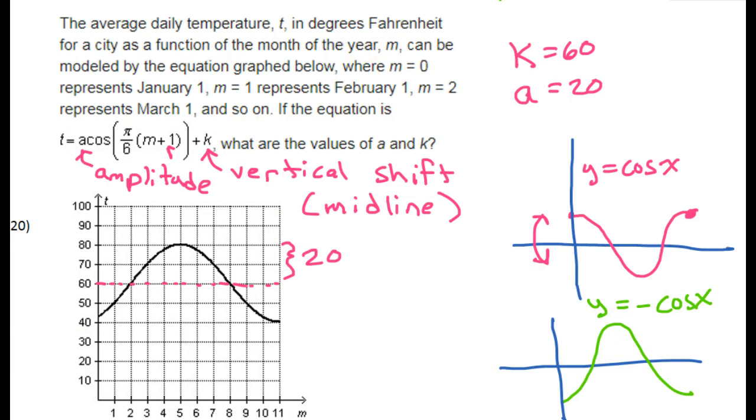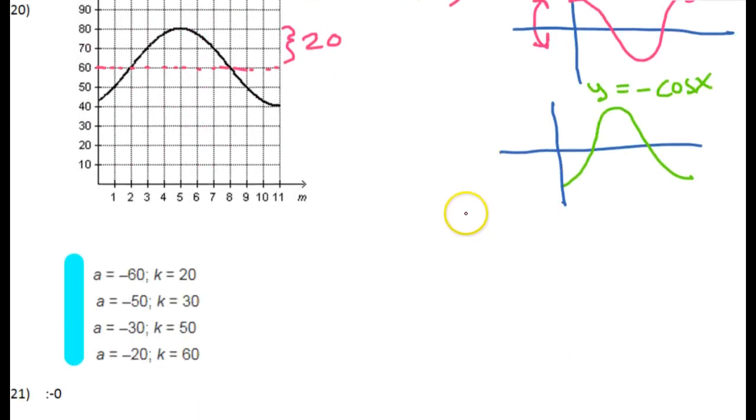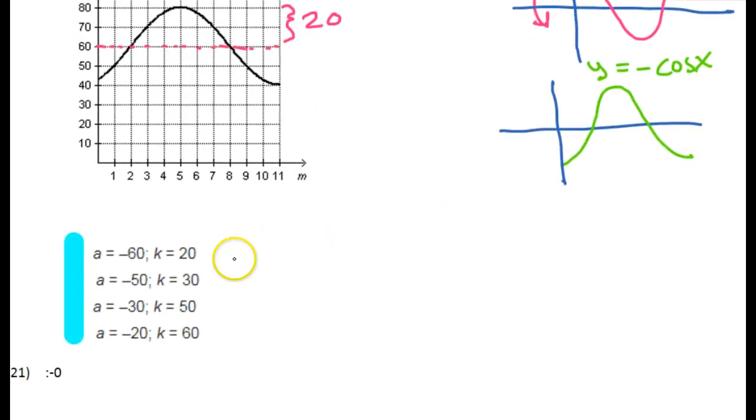So maybe we'll consider this to be a negative 20. So let's go with this and see what we have. A equals negative 20, K equals 60. Let's see what the choices are. Okay, A equals negative 20, K equals 60. So that's the answer right there. Nice.